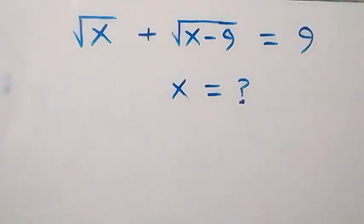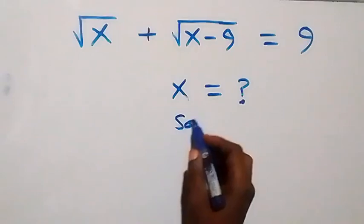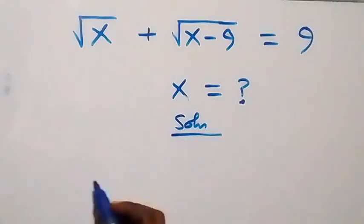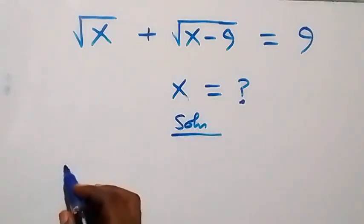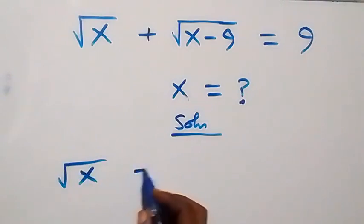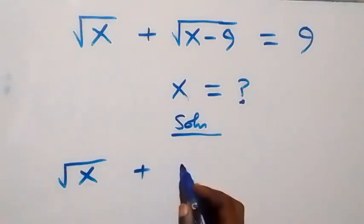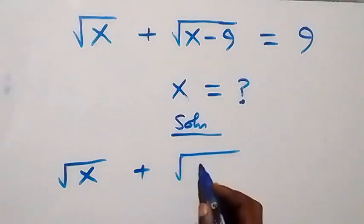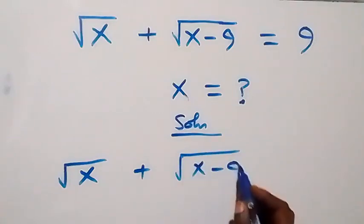Hello, you are welcome. How to solve for x in this nice square root problem. From what we have, the solution: we have square root of x plus square root of x minus 9 equals to 9.